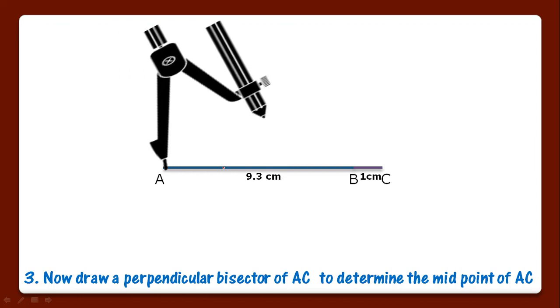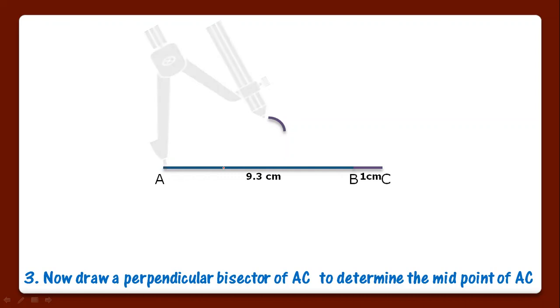Put your compass on point A and draw an arc like this. Then put your compass on point C and mark. You have to do the same process below the line segment at A and C. Then join these lines and mark that point as O. You have got O, the midpoint of AC.